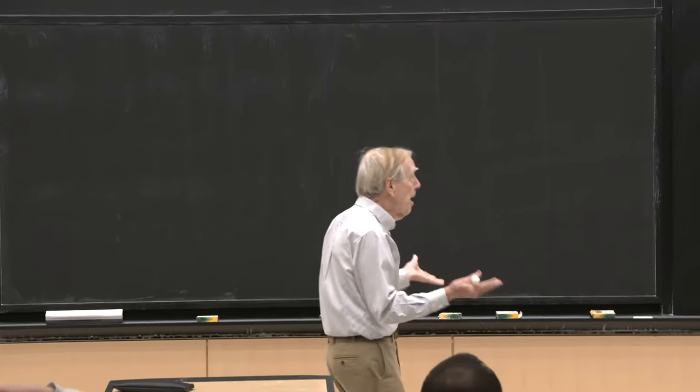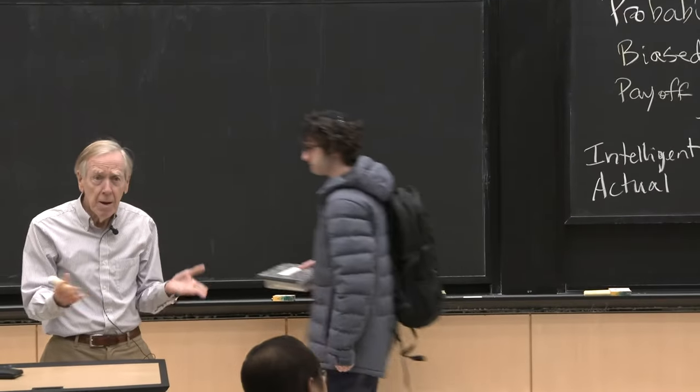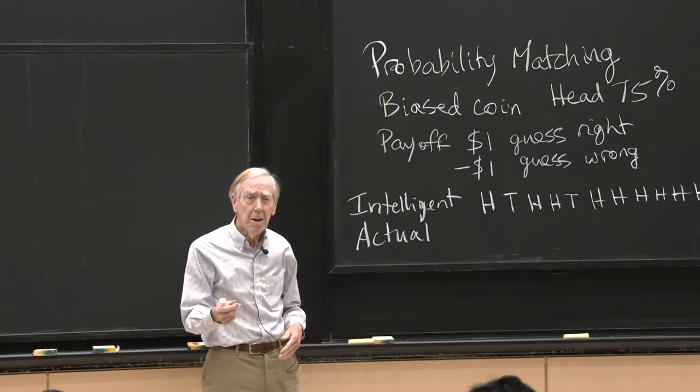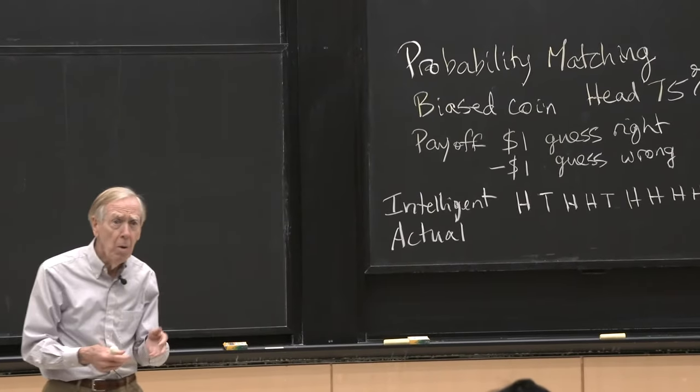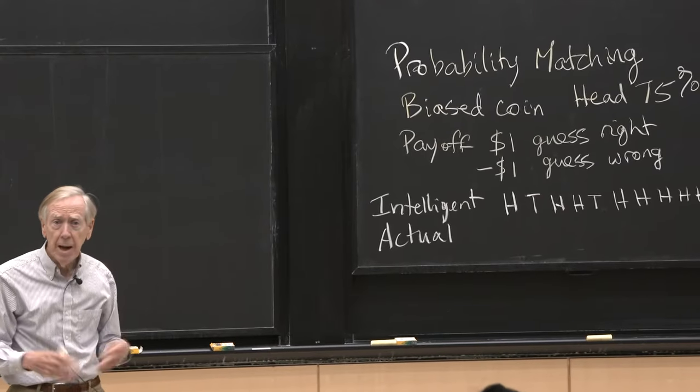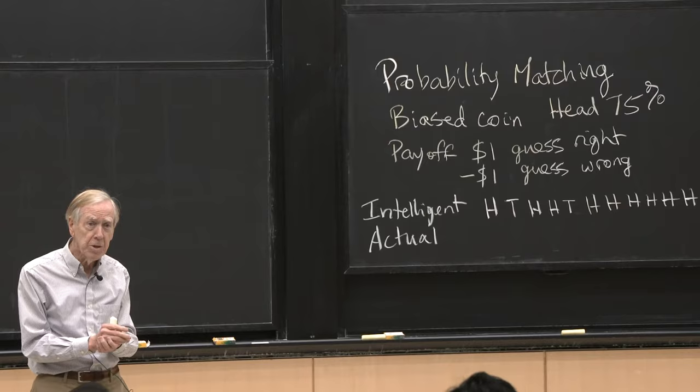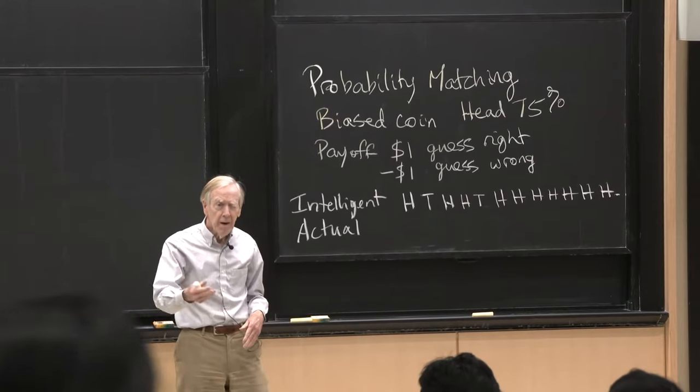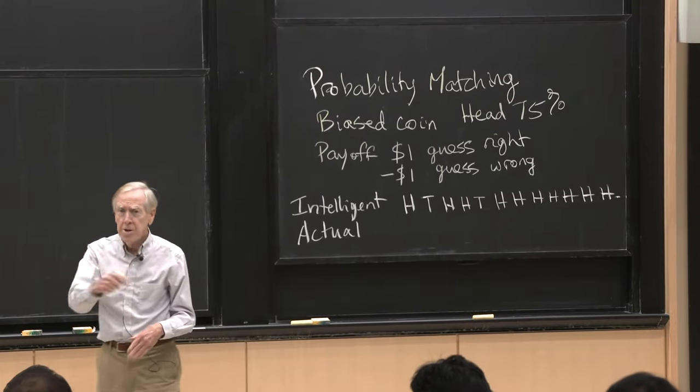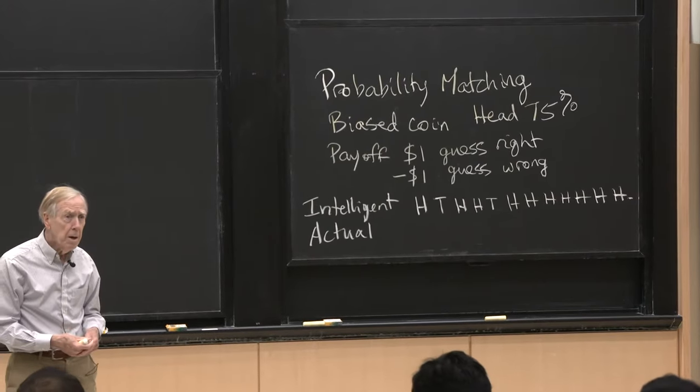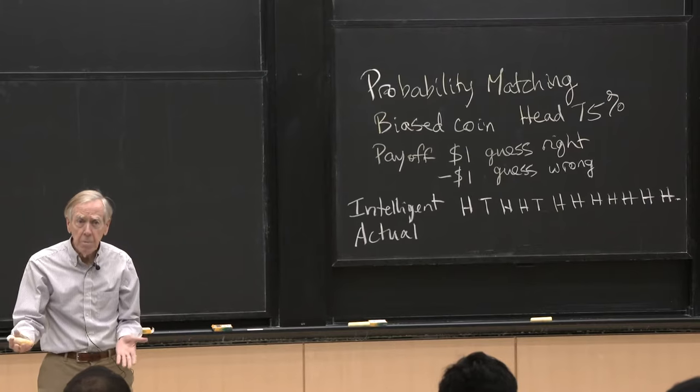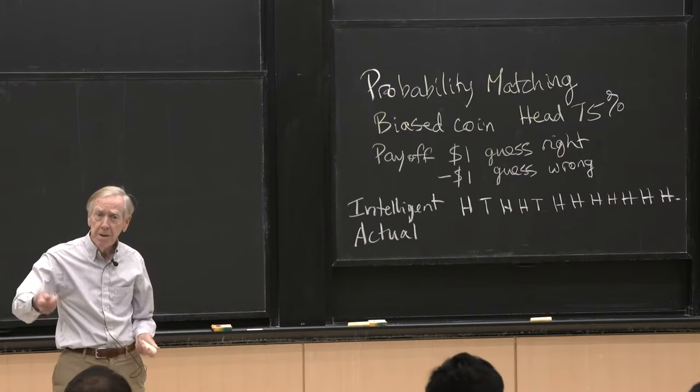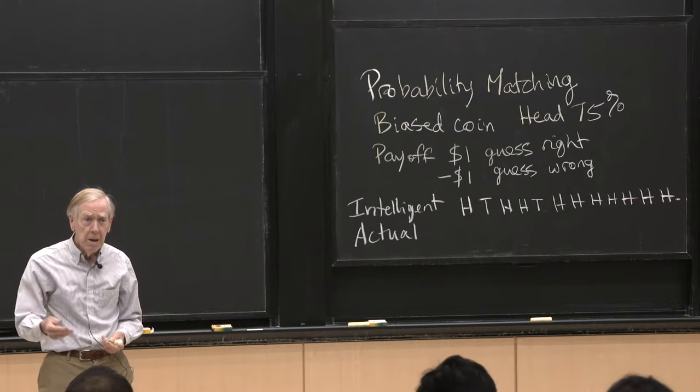So here you go. It's an observation about us or other people. Maybe not us, but suppose you have a biased coin. Maybe the people playing this game don't know, but it's 75% likely to produce heads, 25% likely to produce tails. And then the player has to guess for one flip after another, heads or tails. And you get $1 if you're right, you pay $1 if you're wrong.